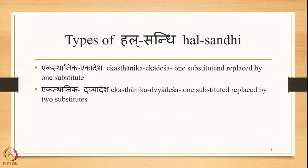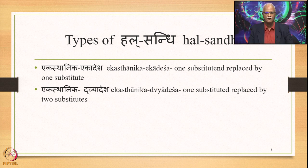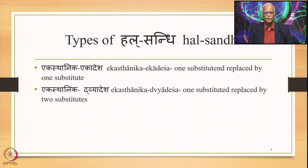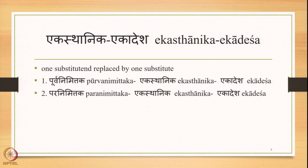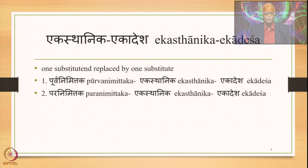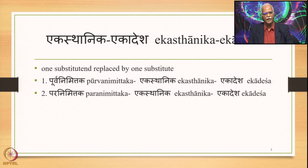We have stated that Hal Sandhi can be described into two types: Ekasthanika Ekadesha, where we have one substituent which is replaced by one substitute, and also Ekasthanika Dvyadesha, where one substituent is replaced by two substitutes. Here are the two instances of Ekasthanika Ekadesha — Purvanimittaka Ekasthanika Ekadesha and also Paranimittaka Ekasthanika Ekadesha.